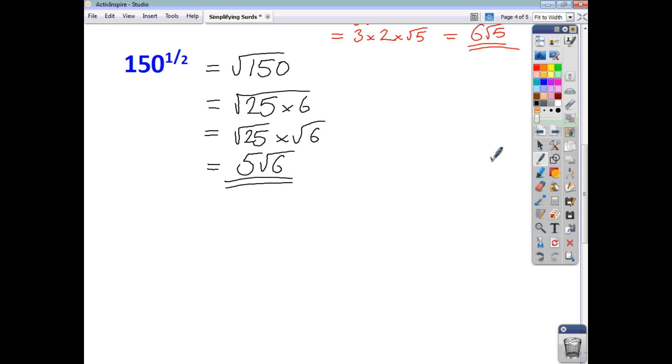So that's how you simplify surds. Just remember the rule. Look to write it as a product. Whatever's under the square root sign, write that as a product of two numbers, one of which has to be a square number. And the bigger the square number, the better, if you want to get to your final answer as quick as possible. So I hope that was helpful. Thank you.